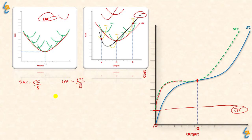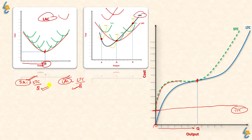At the optimum output, which we identified earlier, short run average cost equals long run average cost. At that same point, short run marginal cost equals long run marginal cost. And since average costs are equal at optimum output, the short run total cost also equals the long run total cost at optimum output.